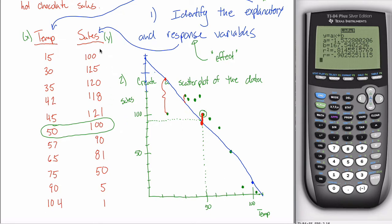That makes sense because there are lots of things that cause sales to change — is it a hot day, is it really windy, is it a school day, is there a lot of traffic? You can come up with a big list of things that might affect sales at some kid's hot chocolate stand. There are a lot of things that affect sales, which is why these values vary so much. One of the things that affects sales is temperature — we know that because we can see that relationship in our scatter plot.